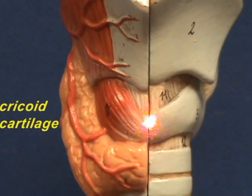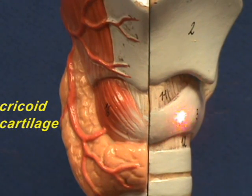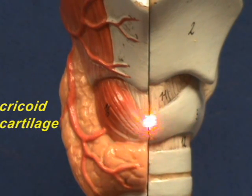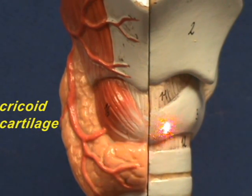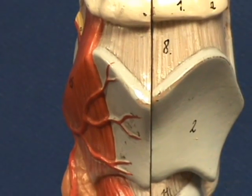This is the cricoid cartilage. It is a piece of cartilage that forms a complete ring. We are looking at the anterior thin part of the ring right now, and we will be looking at the thicker part when we look at the back side of the larynx.